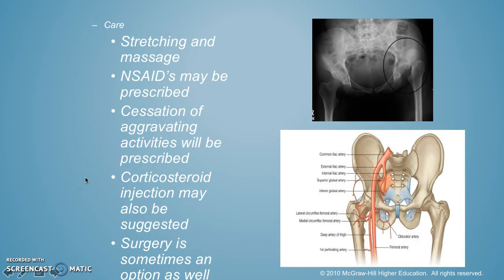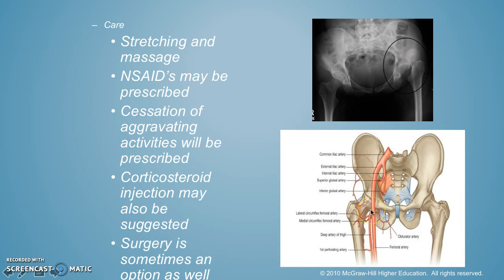What are you going to do? You've got to stretch and massage, and NSAIDs may be prescribed. You've got to stop whatever caused it because you don't want to do it again. They might give you a steroid injection, and surgery can be an option if it continues to happen. You can see in this image the person's hip is up — that's a dislocated hip. There are a lot of vessels around there, hint hint on avascular necrosis — what might happen if the blood flow doesn't get there.